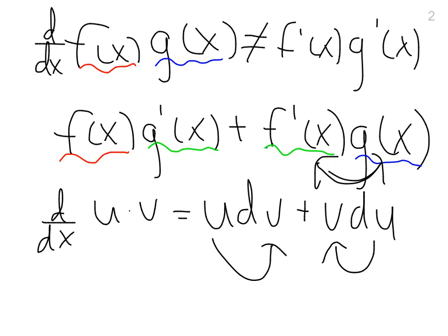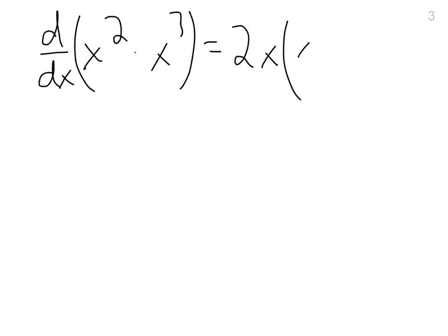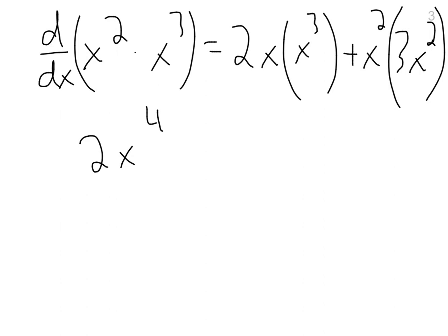So let's do a quick example of that. The derivative of x squared times x cubed. The derivative of x squared is 2x, and then you leave the other function untouched. And then you add, you would do x squared times the derivative of x cubed, which is 3x squared. So if you combine those, you've got 2x to the fourth plus 3x to the fourth, which is equal to 5x to the fourth.